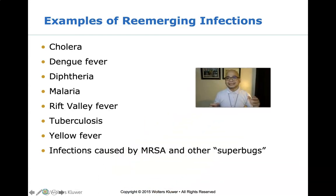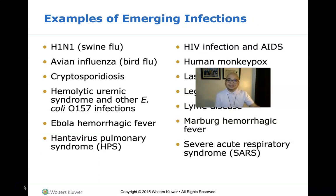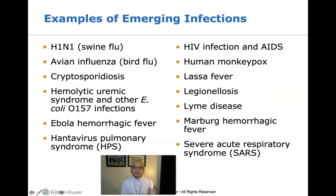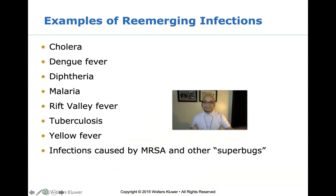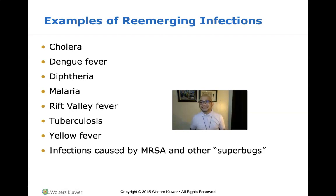Re-emerging infections refer to the reappearance of a known disease after a significant decline in incidence — essentially a comeback. These include cholera, dengue, diphtheria, malaria, Rift Valley fever, tuberculosis, yellow fever, and infections caused by MRSA — methicillin-resistant Staphylococcus aureus — and other superbugs, which are microorganisms that have become antibiotic resistant.